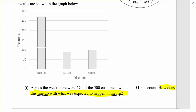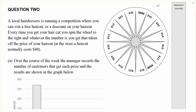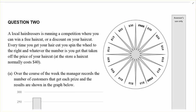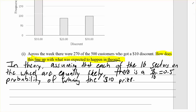Theory means that when looking at the wheel, if we assume that each of those outcomes is equally likely — and I think there's 16 of them — 8 of those 16 involve $10, so there is an 8 out of 16, or 0.5, probability of winning the $10 prize. So then out of 500 customers, what would you expect in theory? We expect 250 of the 500 customers to win $10 in theory.